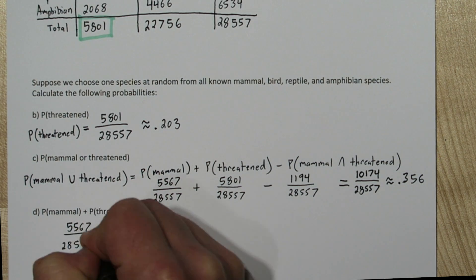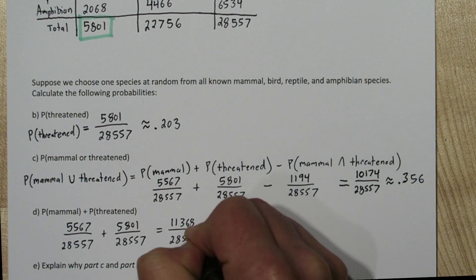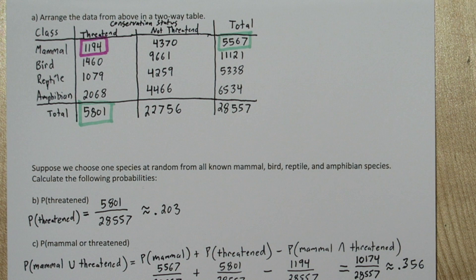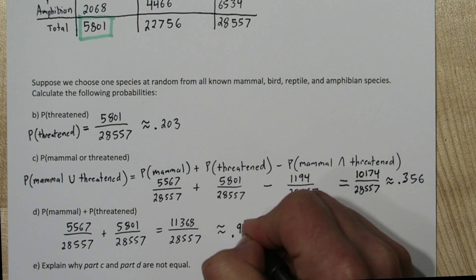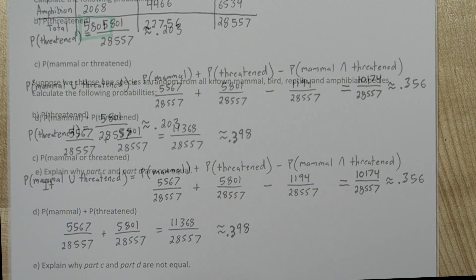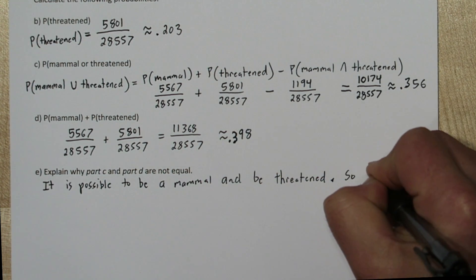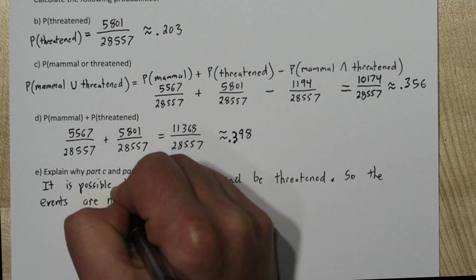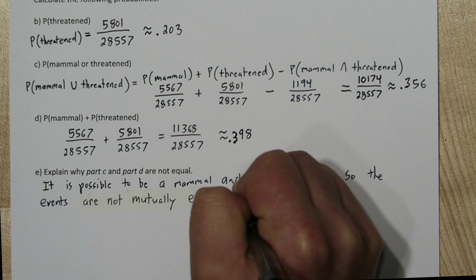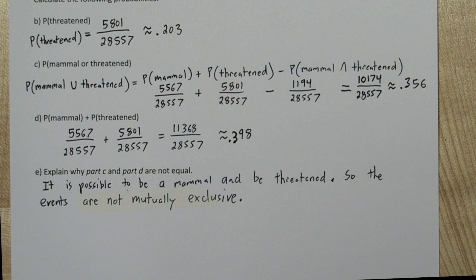If we simply added the probability of being a mammal and the probability of being threatened — the two green boxes in the table — we'd get about 0.398. Parts C and D are not equal because it's possible to be both a mammal and threatened; the events are not mutually exclusive. If none of the mammals were threatened, the events would be mutually exclusive, the probability of being both would be 0, and parts C and D would be equal.